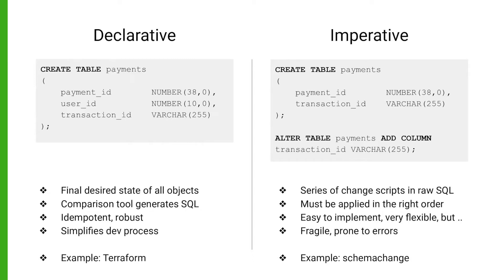The imperative approach is when you define a series of change scripts in raw SQL, which must be applied in the correct order. It is very easy to implement and very flexible, but it is also very fragile and prone to errors. It is not very developer friendly. A good example of an imperative style tool is schema change.